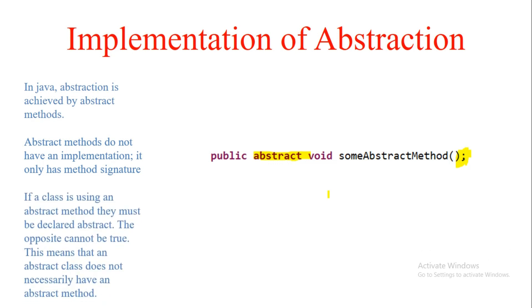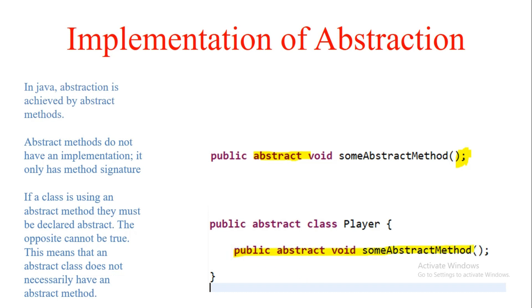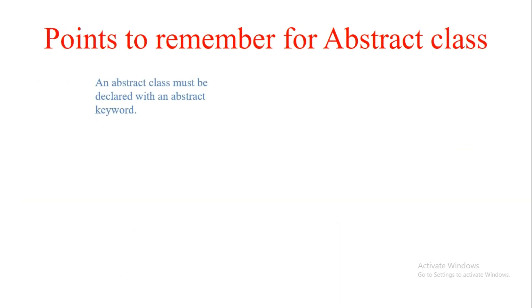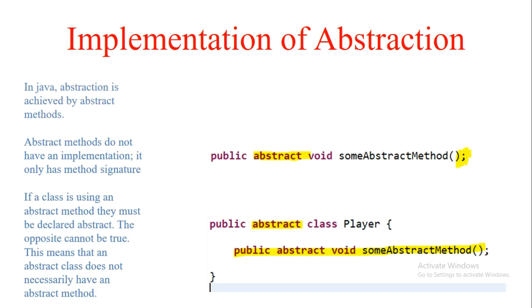An important point: if a class uses an abstract method, it must be declared as abstract. However, the opposite is not true — an abstract class doesn't necessarily have all or any of its methods abstract. There can be a case where all methods are concrete but the class is still declared abstract. If you don't use the abstract keyword on the class when it has an abstract method, a compile-time error will occur.